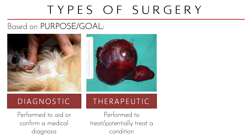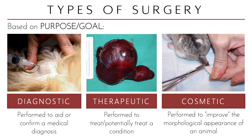Most surgeries are therapeutic in nature, meaning they are done to treat or potentially treat a condition — you can remove a mass, or fix something inside that was ruptured or broken. Also, some surgeries fall under the cosmetic branch, which are performed to improve the morphological appearance of an animal. Controversial procedures like tail docking and ear cropping can be cosmetic surgery. However, some surgeries which could be branded as cosmetic — like fixing the external nares of an animal that is finding it hard to breathe, like brachycephalic breeds such as pugs and bulldogs — can actually be therapeutic in classification.